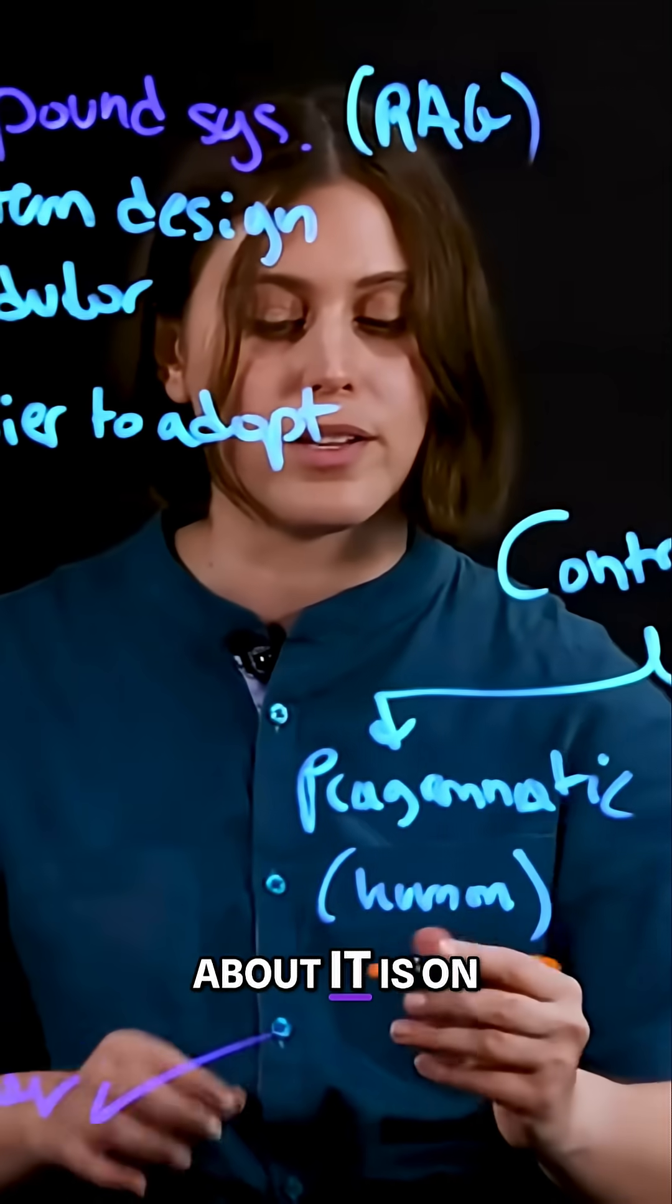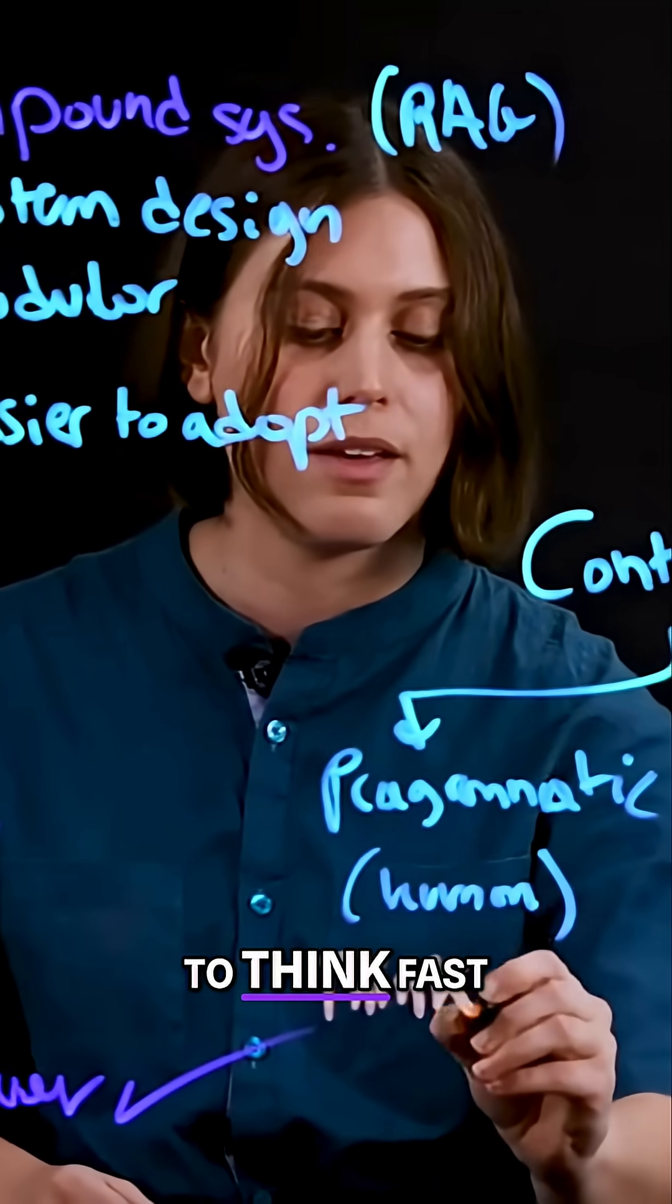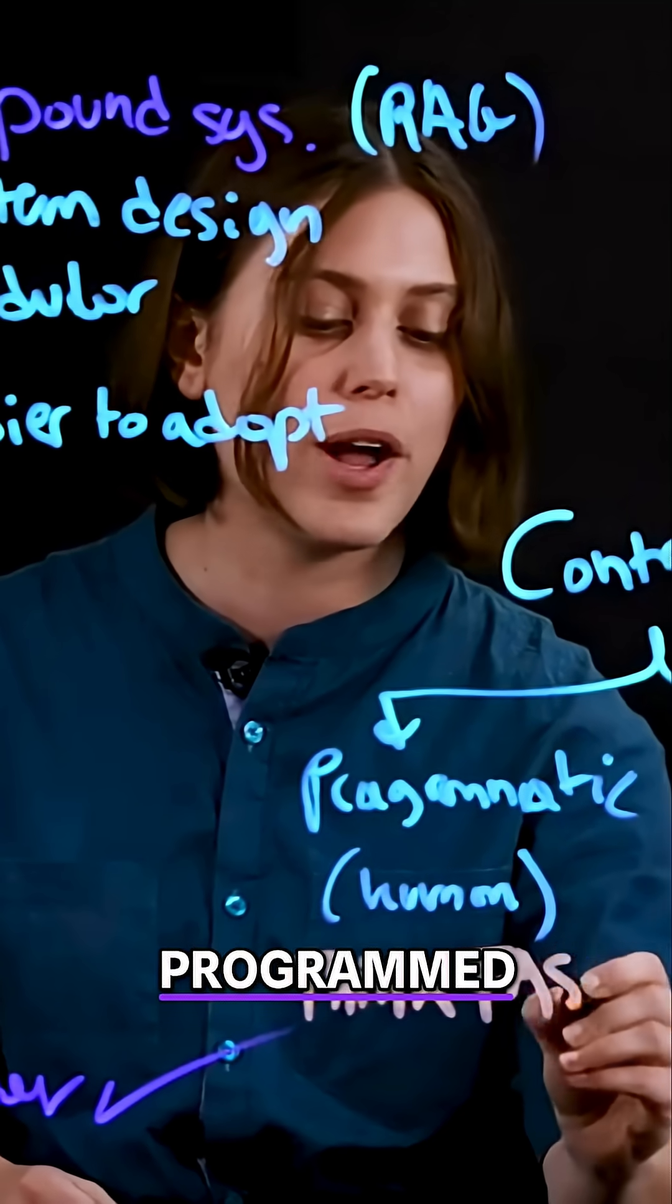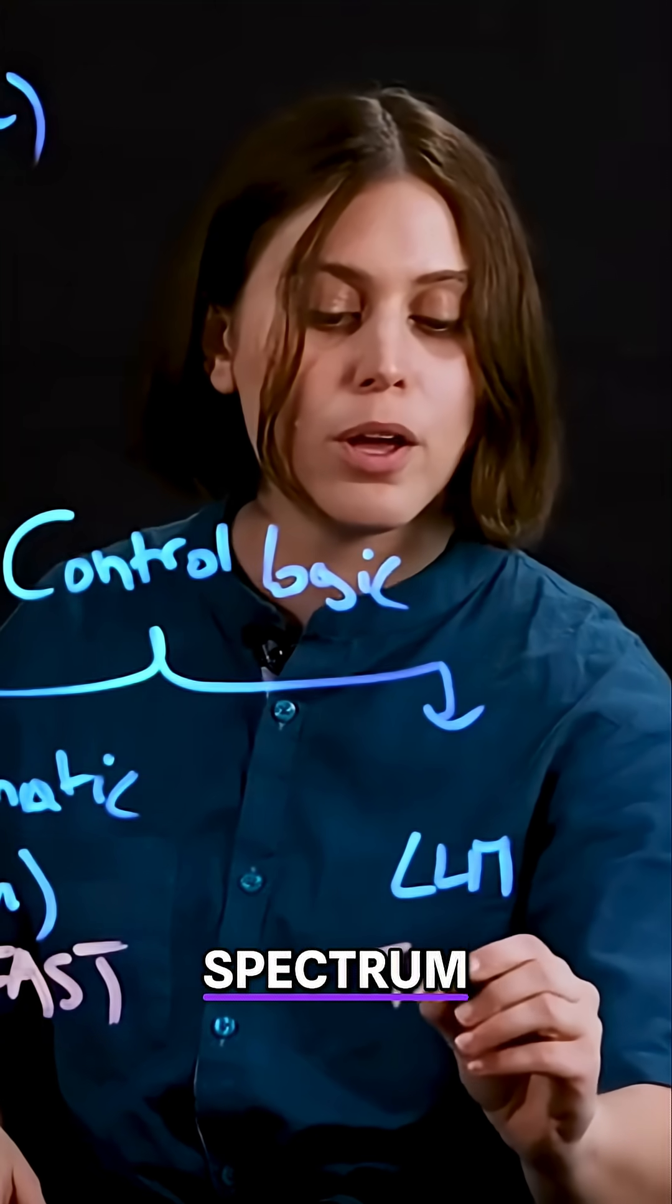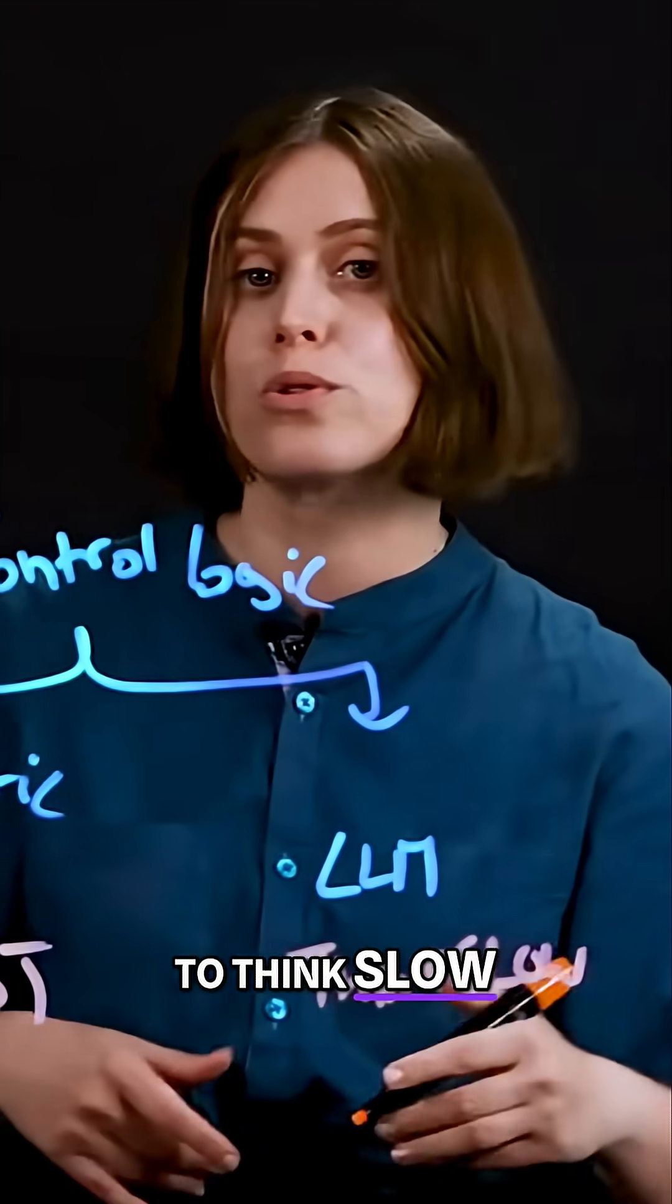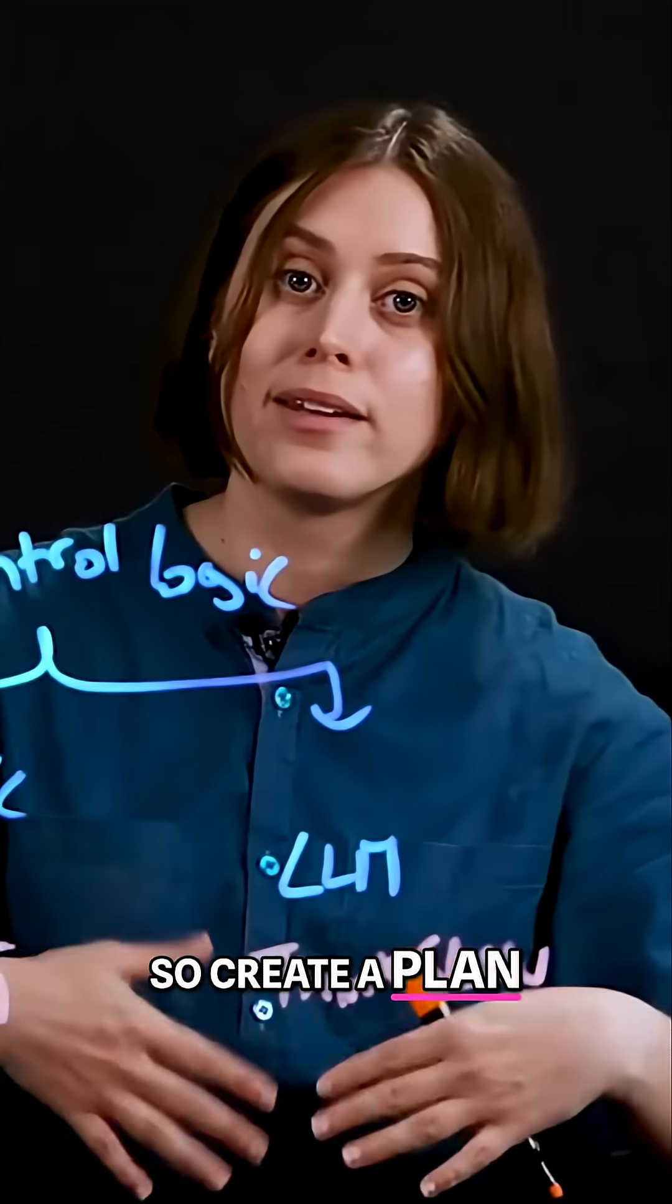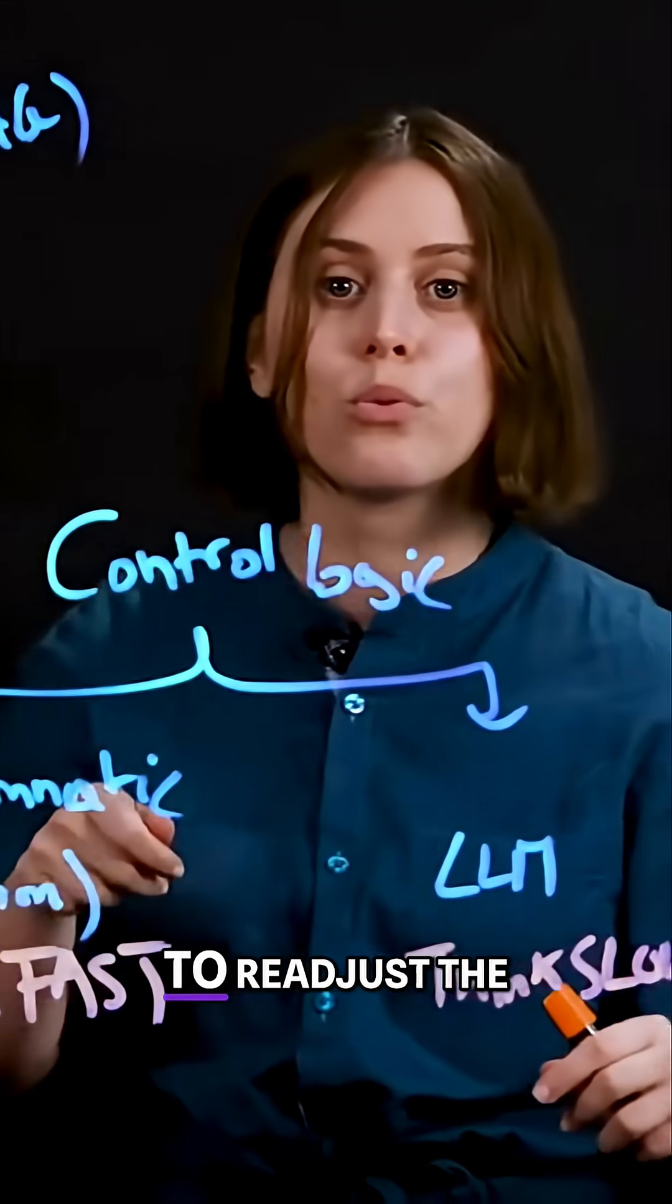Another way to think about it is on one end of the spectrum, I'm telling my system to think fast. Act as programmed, don't deviate from the instructions I've given you. And on the other end of the spectrum, you're designing your system to think slow. So create a plan, attack each part of the plan, see where you get stuck, see if you need to readjust the plan.